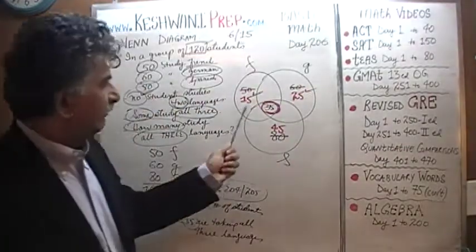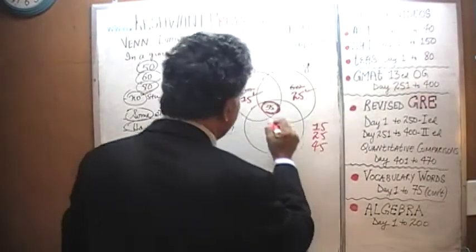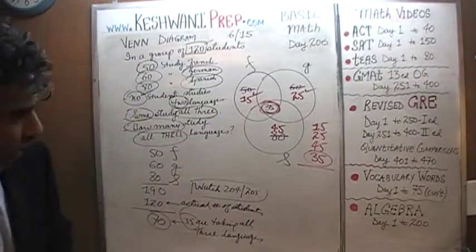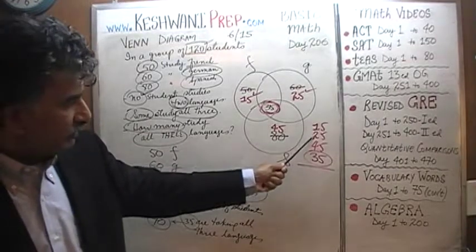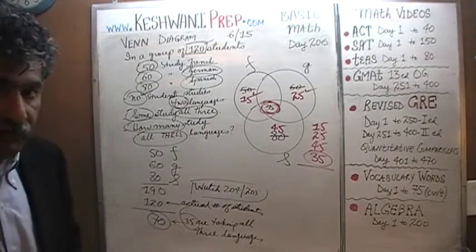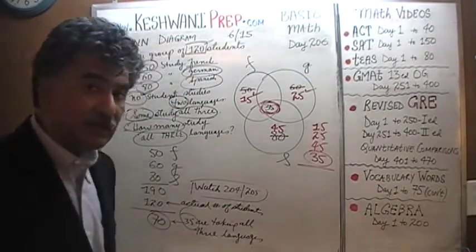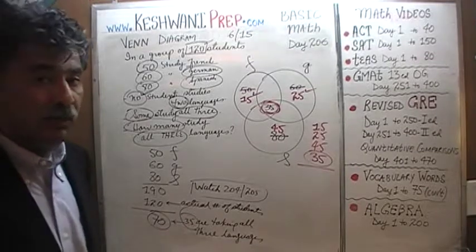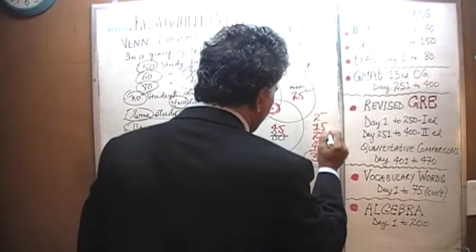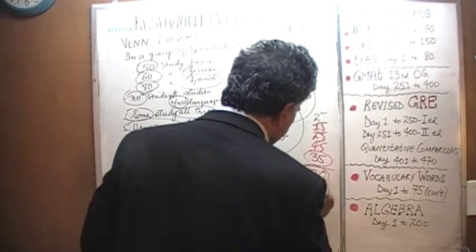15 plus 25 plus 45 plus 35: 5 plus 5 plus 5 plus 5 is 20, that's 2; 2 plus 2 plus 2 is 4 plus 4 is 8, plus 1 is 9, plus 3 is 12. Voilà — that's it. The 15 represents people who study only French, 25 only German, 45 only Spanish, and 35 study all three. Nobody is double counted, nobody is triple counted, and the counting is done properly.